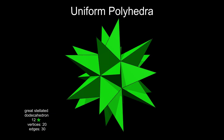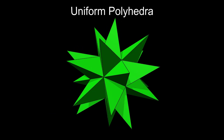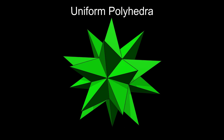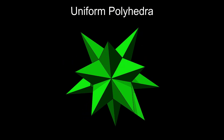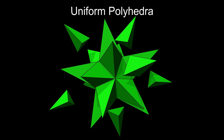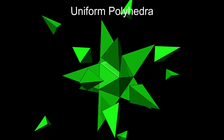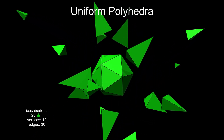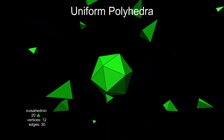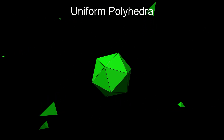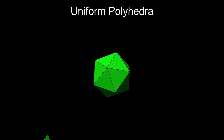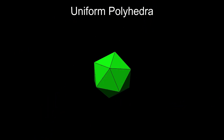Similarly, the great stellated dodecahedron truncates to a treble icosahedron and rectifies to a great icosahedrodecahedron.